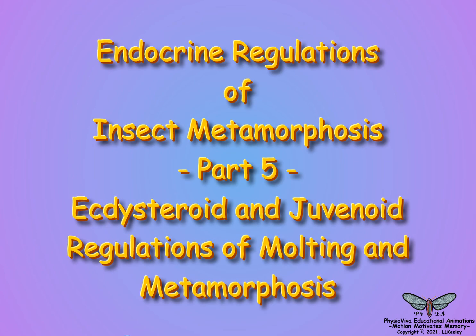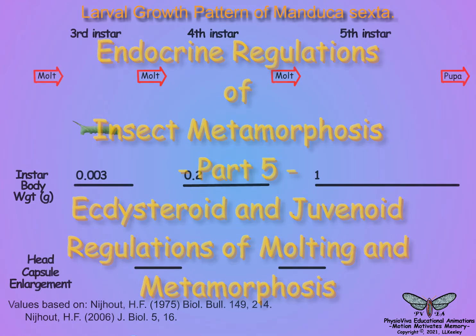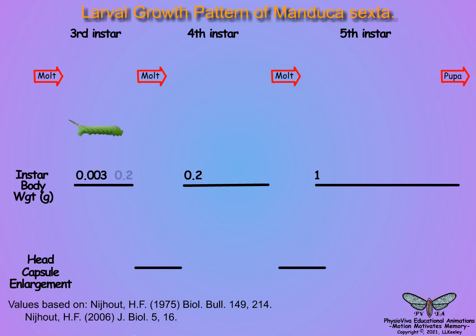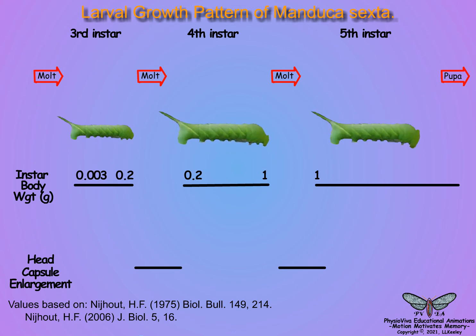This scene will describe the roles of ecdysteroid and juvenile hormones in regulating the events of molting and metamorphosis. Insects grow only during the time between the molts, so it is important that they monitor their growth progress to initiate metamorphosis after the appropriate larval instar.